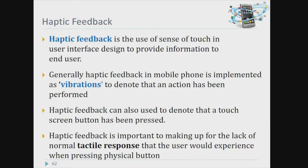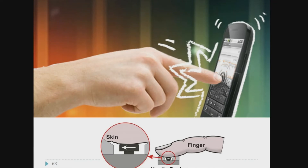The next topic is haptic feedback. Haptic feedback is the use of the sense of touch in user interface design to provide information to the end user. Generally, haptic feedback on mobile phones is implemented as vibration to indicate that an action has been performed. It can also denote that a touch screen button has been pressed, making up for the lack of normal tactile response that a user would experience when pressing a physical button.